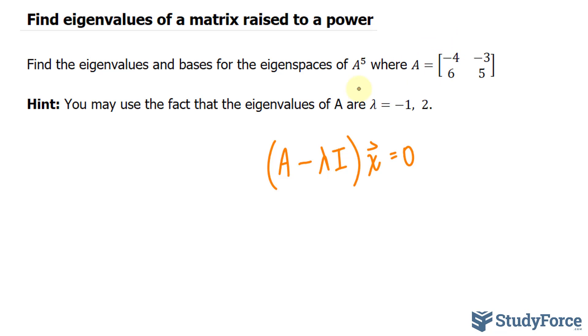If I take matrix A and rewrite it and subtract it by lambda times the identity matrix, I'll end up with negative 4 minus lambda. This element will be negative 3. This element will stay as 6 because it's 6 minus lambda times 0. And this last one will be 5 minus lambda.